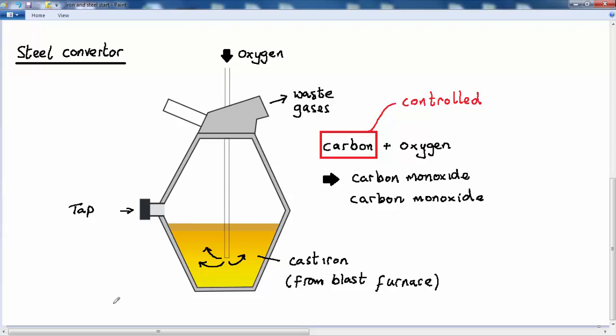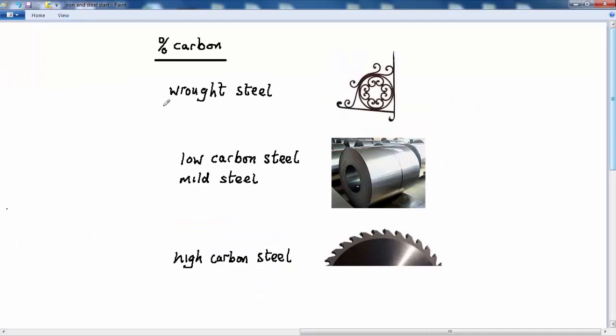So let's have a look at the different types of steel that can be obtained from this steel converter. And the type of steel, as I said earlier, depends on the percentage of carbon that is present in its structure.